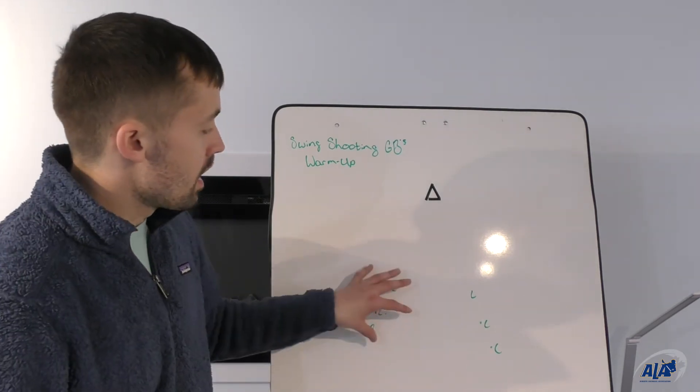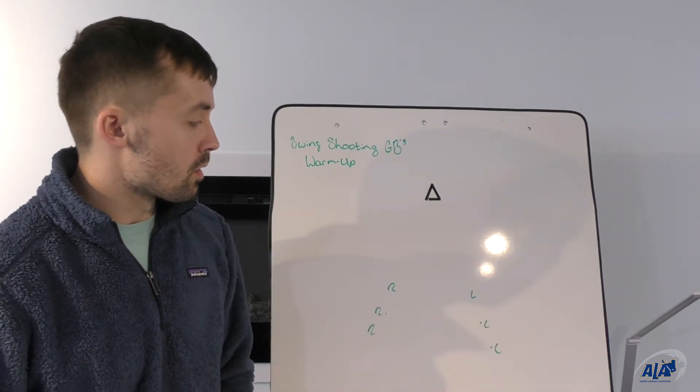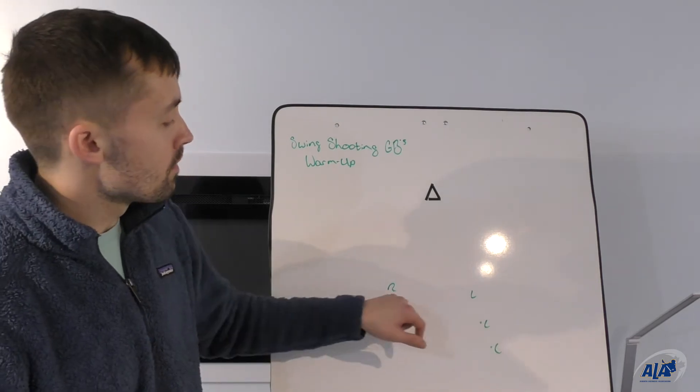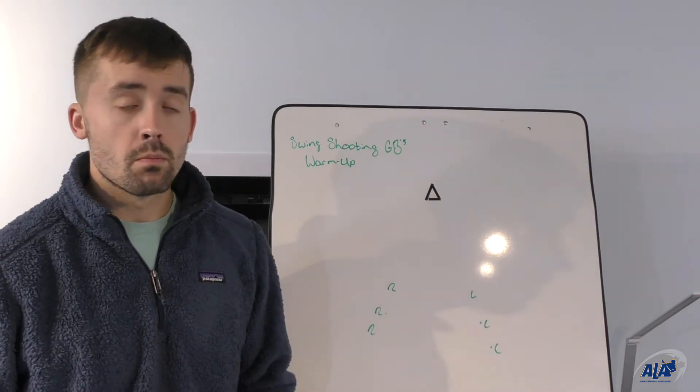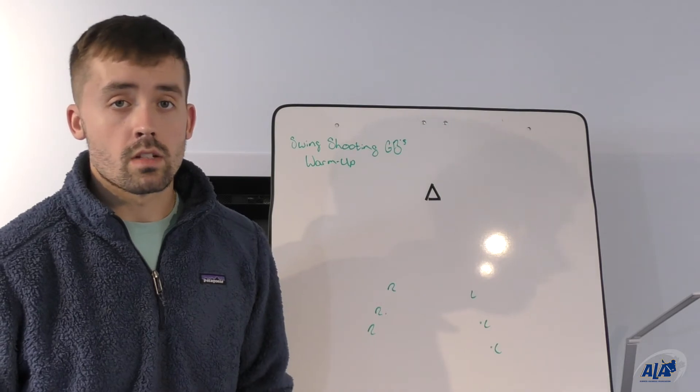The drill setup is we'll have a line of righties at the top of the floor and a line of lefties at the top of the floor here. To start the drill, the two first people in both lines don't need a ball in their stick. Subsequent players will all need balls in their stick.